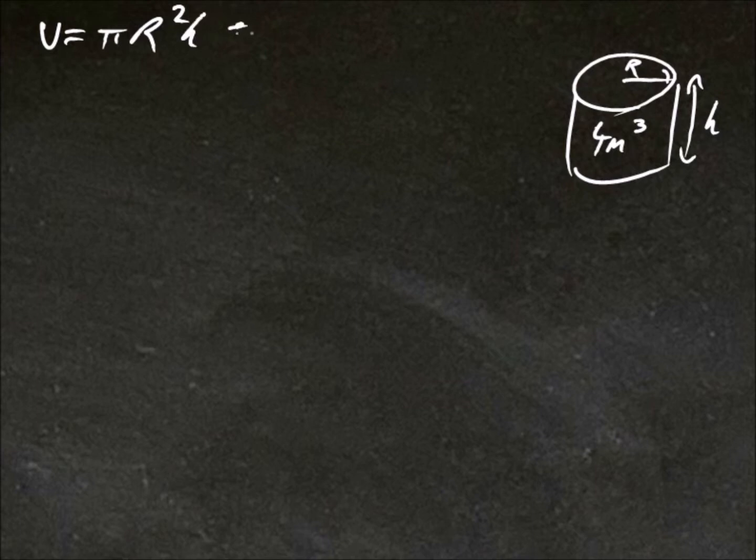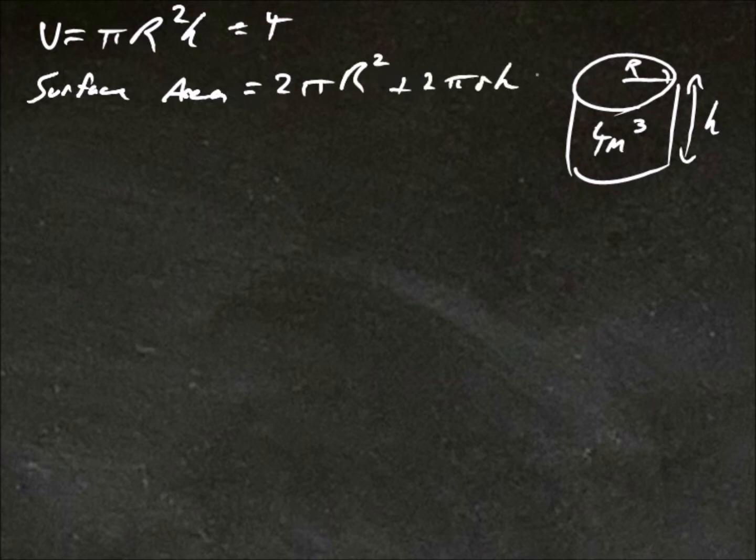That has to equal 4 according to the question. The surface area is 2 pi r squared plus 2 pi r h. So you've got 2 pi r squared, which is the top and bottom. And then the side walls is 2 pi r h.